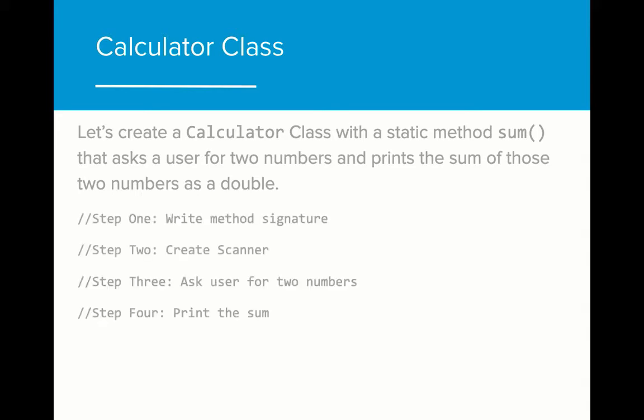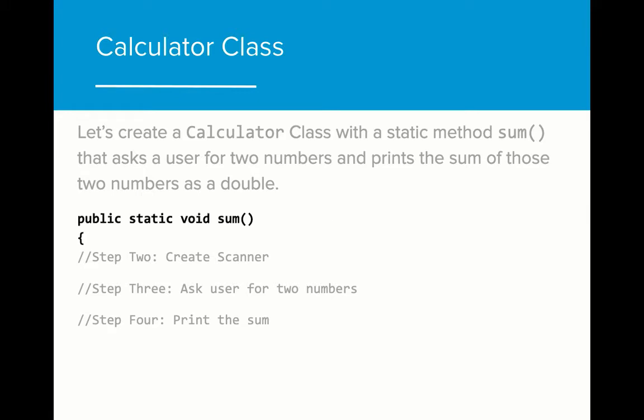Here are the steps written out for this method. Did you get it right? First, we need to declare the method. We need to include the static keyword so that we can call the method without having to create a calculator object, and the keyword void because the method doesn't return anything.